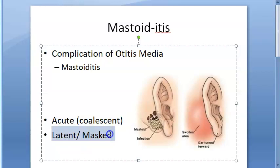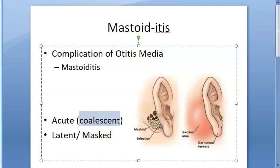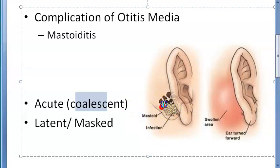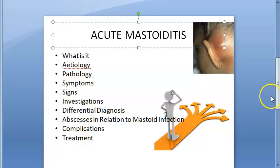There are two types: acute or coalescent, and then latent or masked. Acute means sudden onset. Latent or masked means there will be slow destruction of the mastoid air cells with mild pain behind the ear, because the acute condition was not treated properly. Coalescent means the air cells combine together — so that is coalescent mastoiditis. In acute coalescent mastoiditis, these air cells will coalesce together.